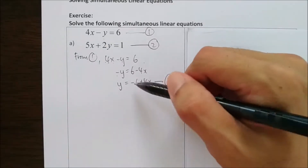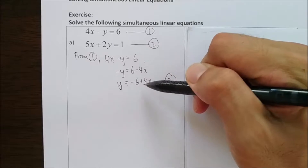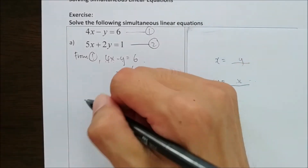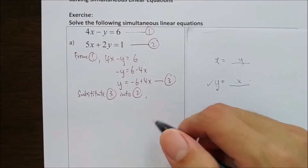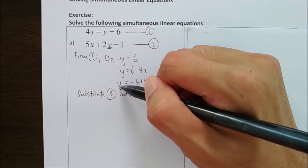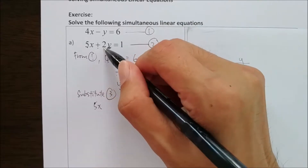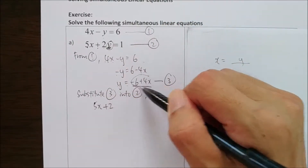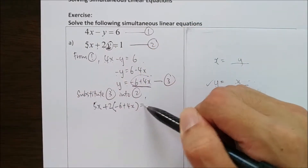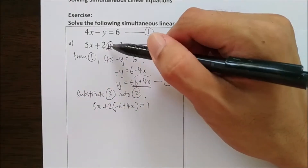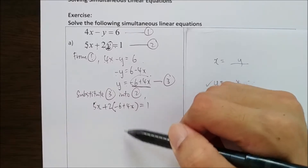After I get equation number 3 — since this comes from equation 1 — I will substitute this into equation number 2. So I substitute y equals negative 6 plus 4x into equation number 2. Meaning that the y in equation 2 will be replaced by negative 6 plus 4x. Always use brackets when substituting a value. And equals to 1. So now the whole equation only has one unknown, which is x. Then we can solve the equation.